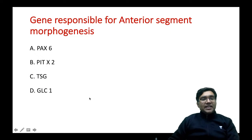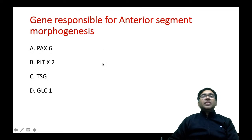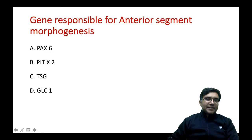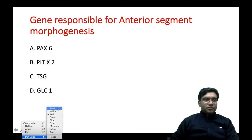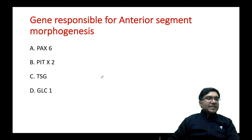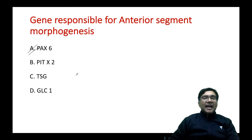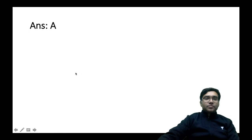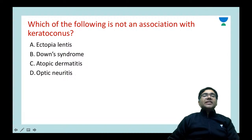The next All India PG question: which gene is responsible for anterior segment morphogenesis? Options are PAX6 gene, PITX2 gene, TSG gene, or GLC1 gene. The answer is A — the PAX6 gene is responsible for anterior segment morphogenesis.